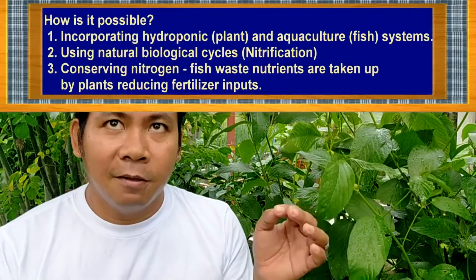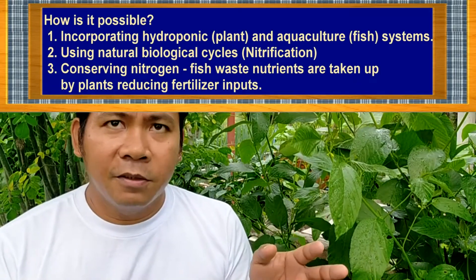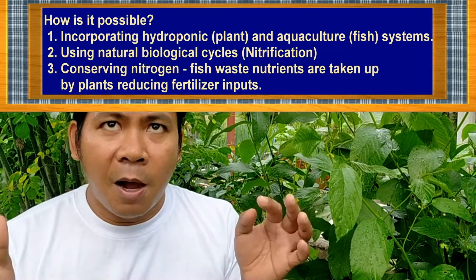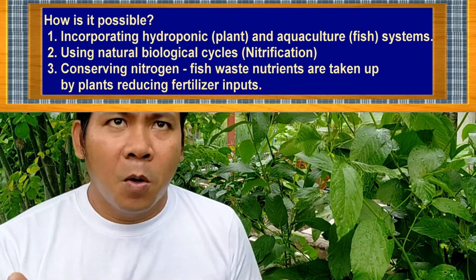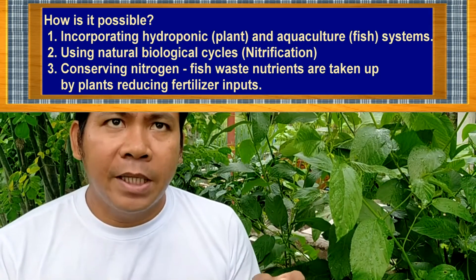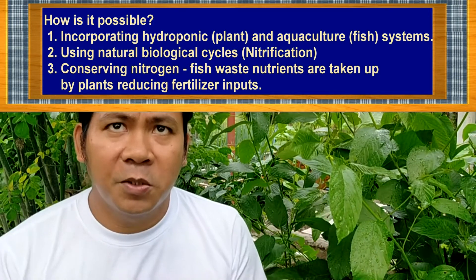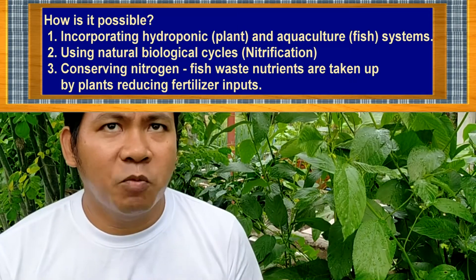The two main components of an aquaponics system are the fish tank and the grow bed — the plant box. First, we're talking about the role of the fish. The fish is raised in a tank or pond and are fed. The fish produce ammonia as waste. Too much waste substance is toxic for the fish, and you cannot withstand high levels of ammonia.